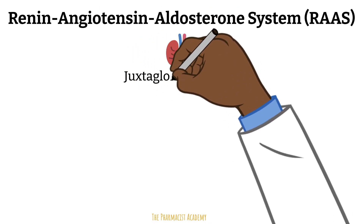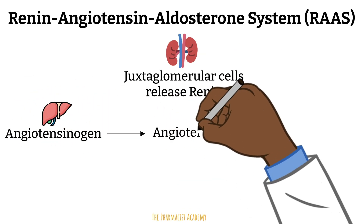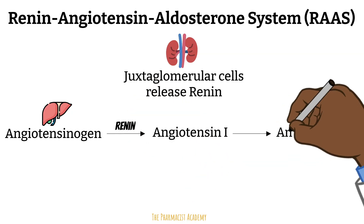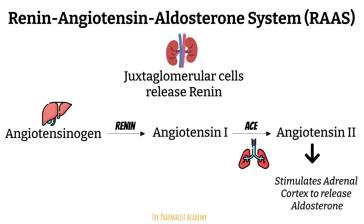When the RAAS is activated, the juxtaglomerular cells in the kidneys release renin. Angiotensinogen from the liver is converted into angiotensin 1 by renin. Angiotensin 1 is then converted to angiotensin 2 by the angiotensin-converting enzyme, ACE. Angiotensin 2 stimulates the adrenal cortex to release aldosterone, which increases sodium reabsorption — water follows sodium, increasing blood pressure. When potassium levels are high, aldosterone promotes potassium excretion. When blood pressure and volume are elevated, aldosterone secretion and renin release are inhibited to reduce blood pressure.